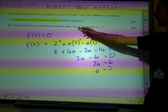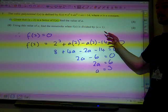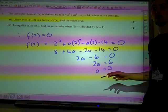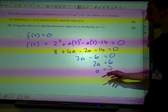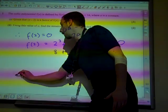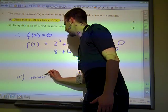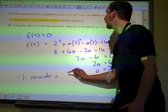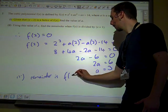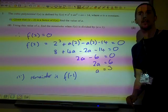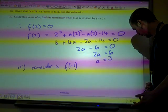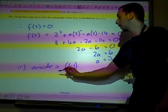Using this value of a, find the remainder when f of x is divided by x plus 1. Well, the remainder when it's divided by x plus 1 is whatever f of minus 1 is equal to. So the question really is just saying, find f of minus 1.